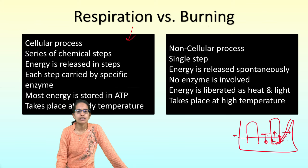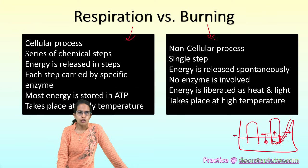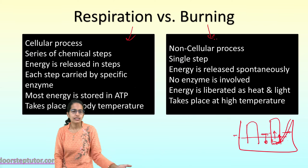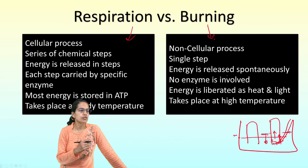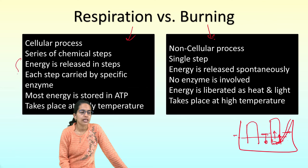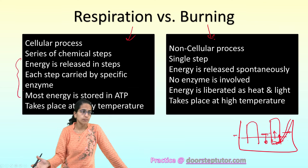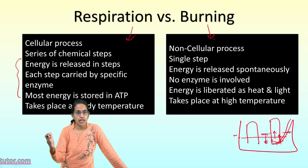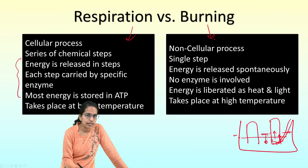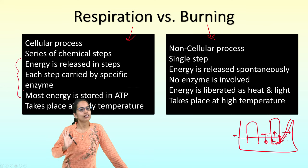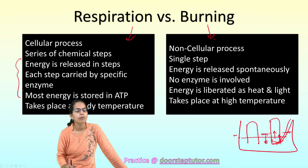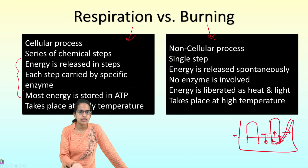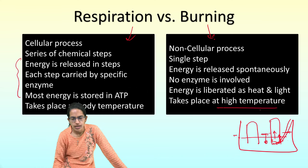The difference between respiration and burning: respiration is a cellular process occurring in multiple steps — glycolysis in the cytoplasm, then the Krebs cycle in the mitochondria — each step carried out by specific enzymes, releasing energy as ATP at normal body temperature. Burning is a non-cellular, single-step process that releases light and heat spontaneously with no enzymes involved and requires a temperature higher than normal.